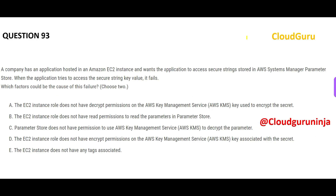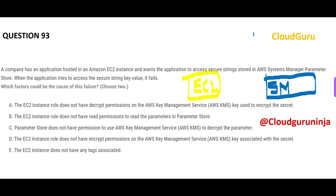Now let's look at the question. We have an EC2 instance — this yellow box — and this blue box is the Systems Manager. Systems Manager has a secure string stored in it, and the EC2 instance is trying to get this secured string from Systems Manager.